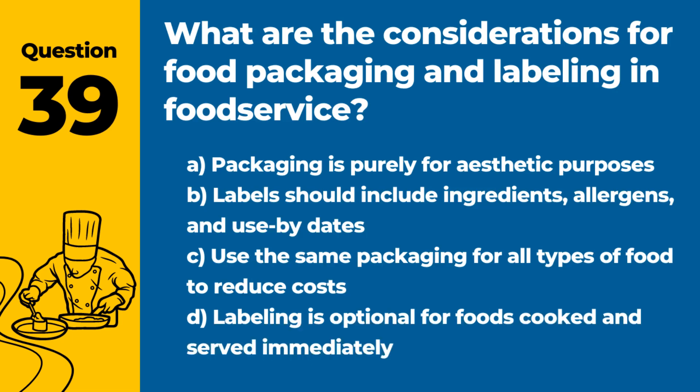Question 39. What are the considerations for food packaging and labeling in food service? Answer: B. Labels should include ingredients, allergens, and use-by dates. Proper packaging and labeling are important for informing consumers and preventing foodborne illness.